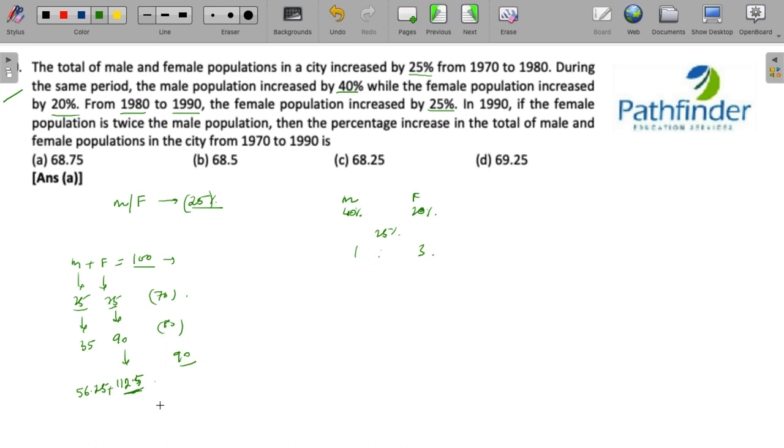What is the sum of this population? 168.75. What is the question asked? Percentage increase in total of male and female populations in the city? The answer is easy, 68.75.